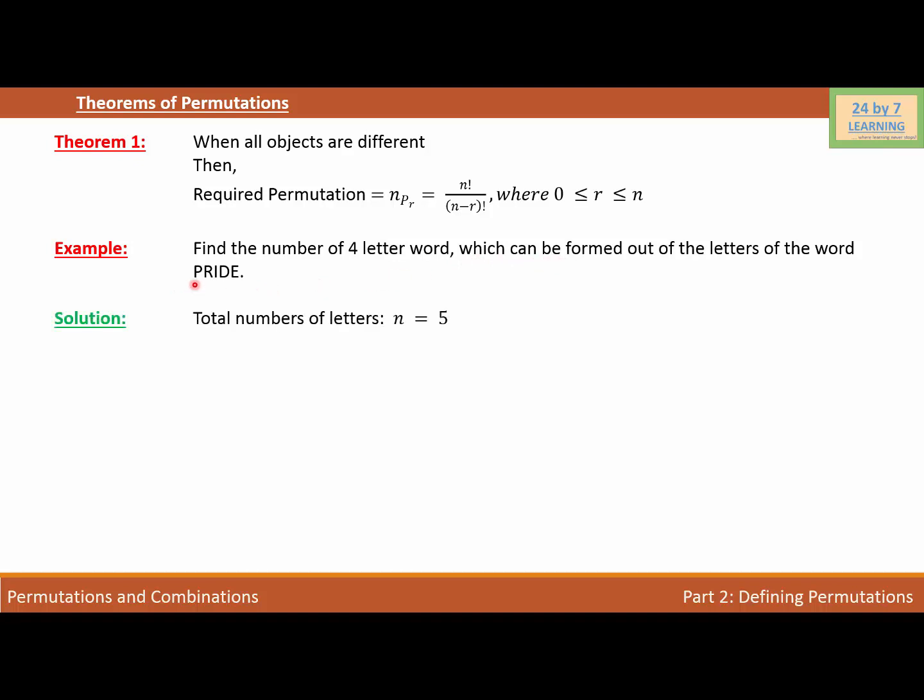As you can see, we have 1, 2, 3, 4, 5. We have five letters in the word PRIDE. So we can write total number of letters, which is basically n, is equal to 5.